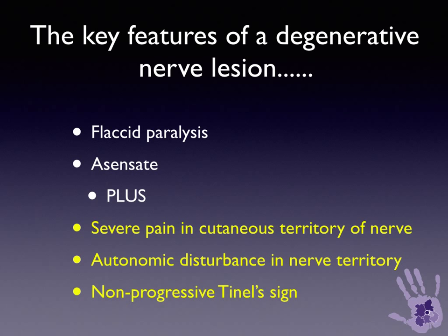We are trying to identify a degenerative nerve lesion — one in which Wallerian degeneration has occurred. This means there is axonal damage, axonal loss or axonopathy. These patients will have flaccid paralysis and an insensate limb, similar to a conduction block, although in a conduction block there may be some preservation of less myelinated fibres such as autonomic function and C fibres. All patients with a degenerative nerve lesion will have severe pain in the cutaneous territory of the nerve. Because they have lost axons — not just myelinated segments — they will also have autonomic disturbance within the territory of that nerve, meaning myelinated and unmyelinated fibres are both damaged.